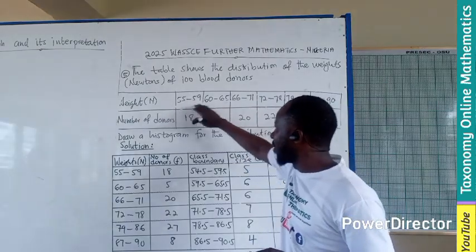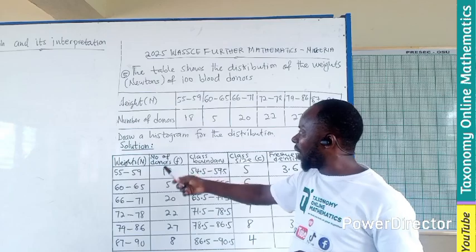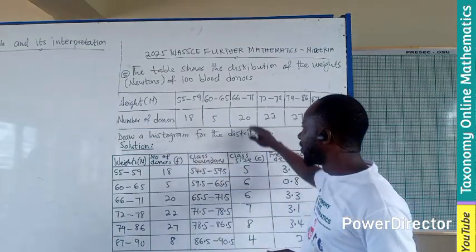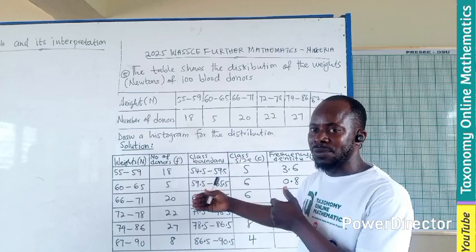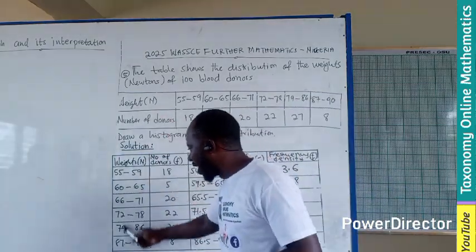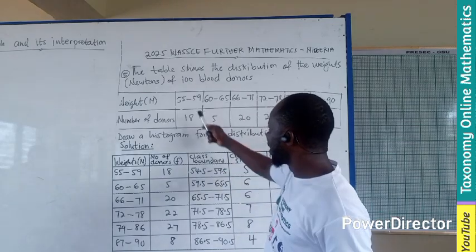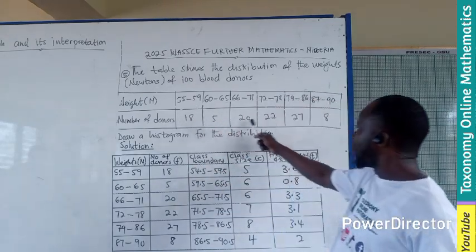We have the weights, the intervals are given, which is an uneven interval. We have to draw a histogram for this distribution. I've already constructed a table that will be needed for drawing the histogram. The first thing to do is to repeat your values of the weights, then we have the donuts, which is going to be the frequency.